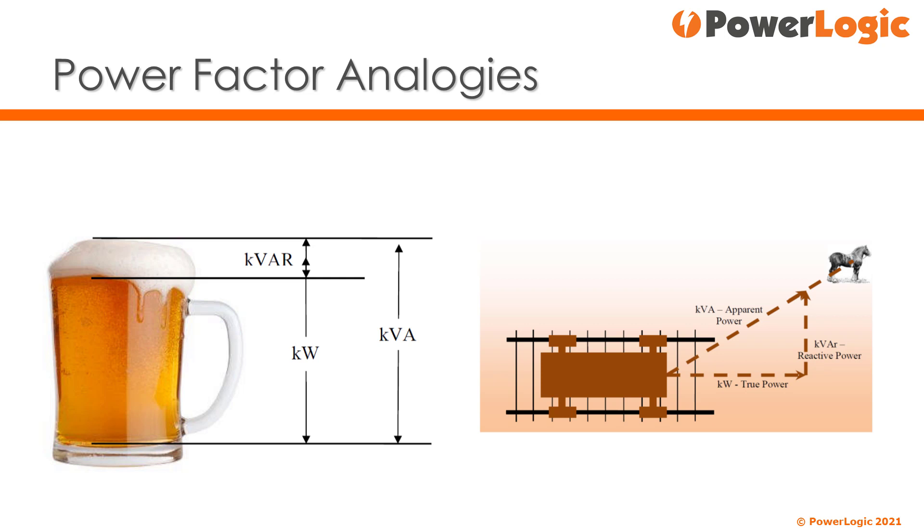The pull at right angles to the track does no effective work. Kvar. The horse would ideally pull the cart directly down the railway track, so the apparent power equals the real power, thus minimizing wasted energy.